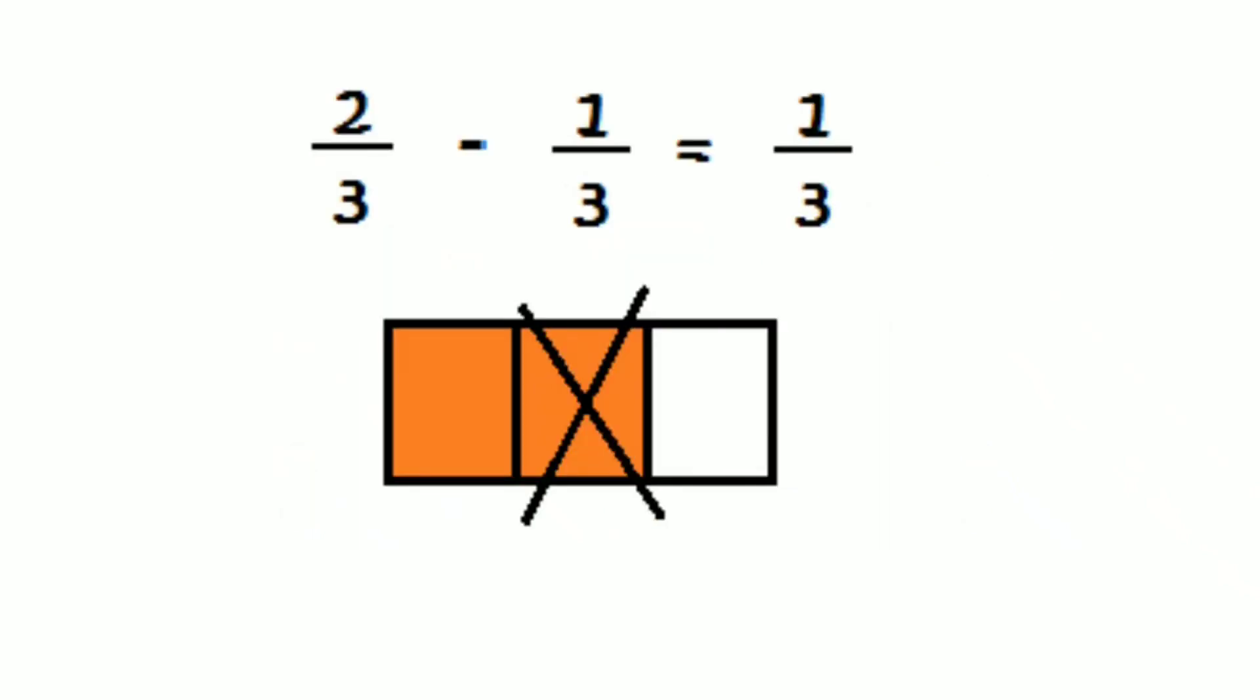Look at here. 2 by 3 minus 1 by 3. Total parts are 3. 2 by 3 minus 1 by 3. 2 minus 1 is 1. Write the common denominator, that is 3. So our answer is 1 by 3.